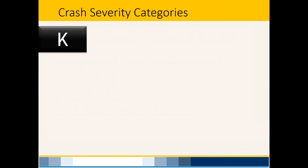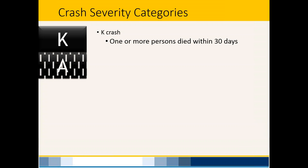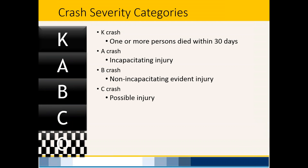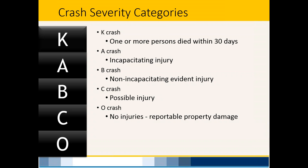Moving into HSM terminology: we use the KABCO system. K is a fatality, A is an incapacitating injury, B is a non-incapacitating injury, C is a possible injury, and O is property damage only. A safety engineer named Tom Welch offered a memorable mnemonic: K is killed, A is ambulance, B is bloody, C is complaining, and O is property damage only. We weight crashes based on a severity index using this system.